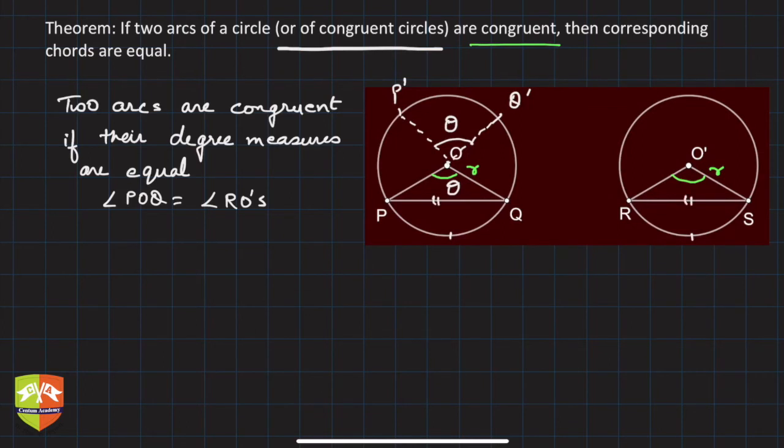The proof will be very simple. In triangle OPQ and triangle O'RS, we have OP equals O'R. Why? Radii are equal, the radii are the same.